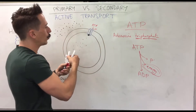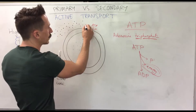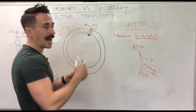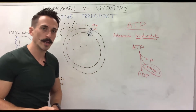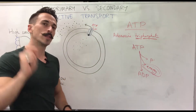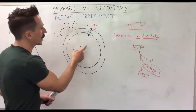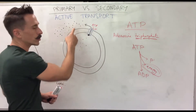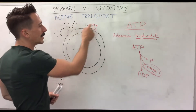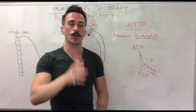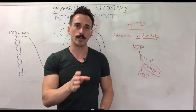The pump opens up and lets this particular solute out of the cell against its concentration gradient. In this process, where a solute is going against its own concentration gradient using ATP, this process is called primary active transport.